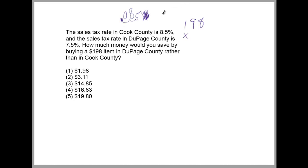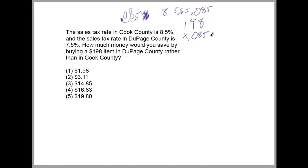So 8.5% equals 0.085. To find out what 8.5% of 198 is, you multiply 198 times 0.085. But what I normally do in this kind of situation is multiply 198 times 1.085 instead.